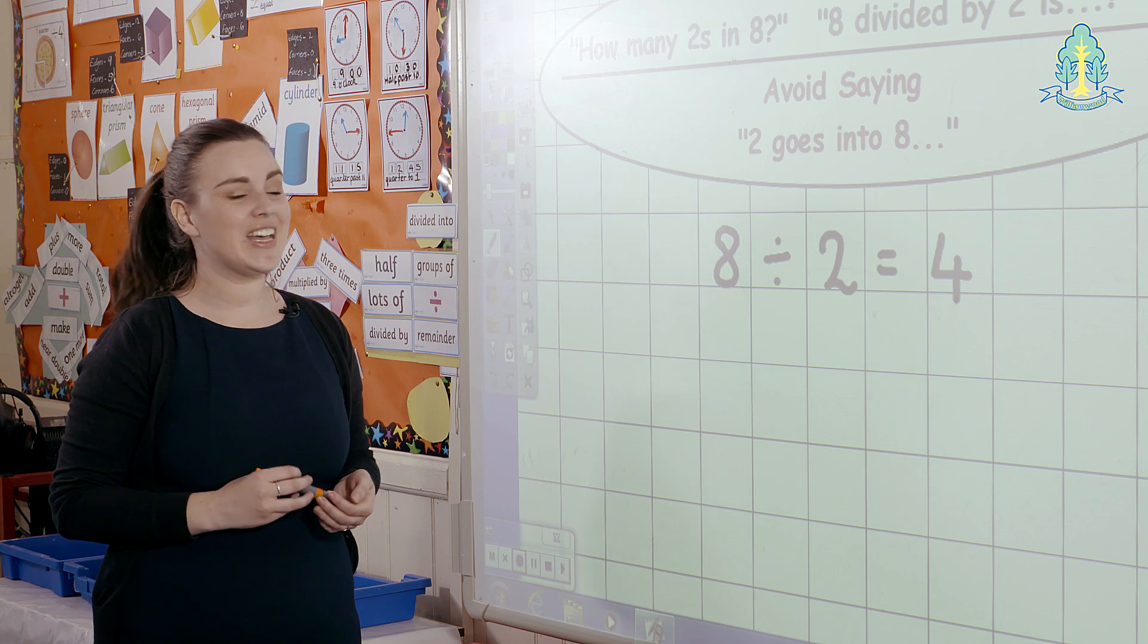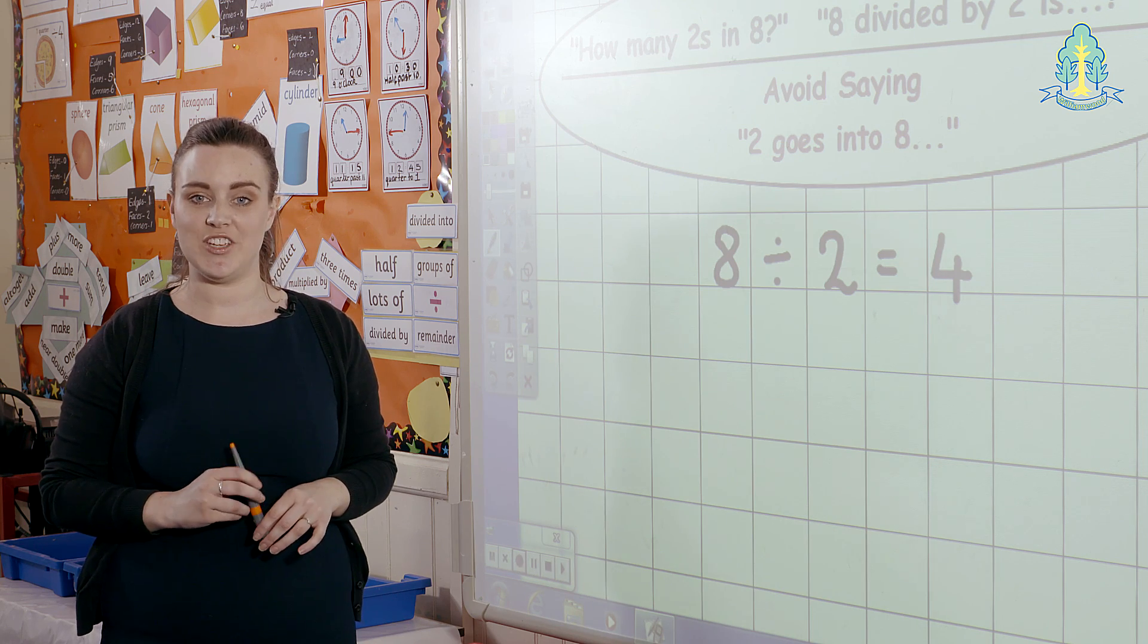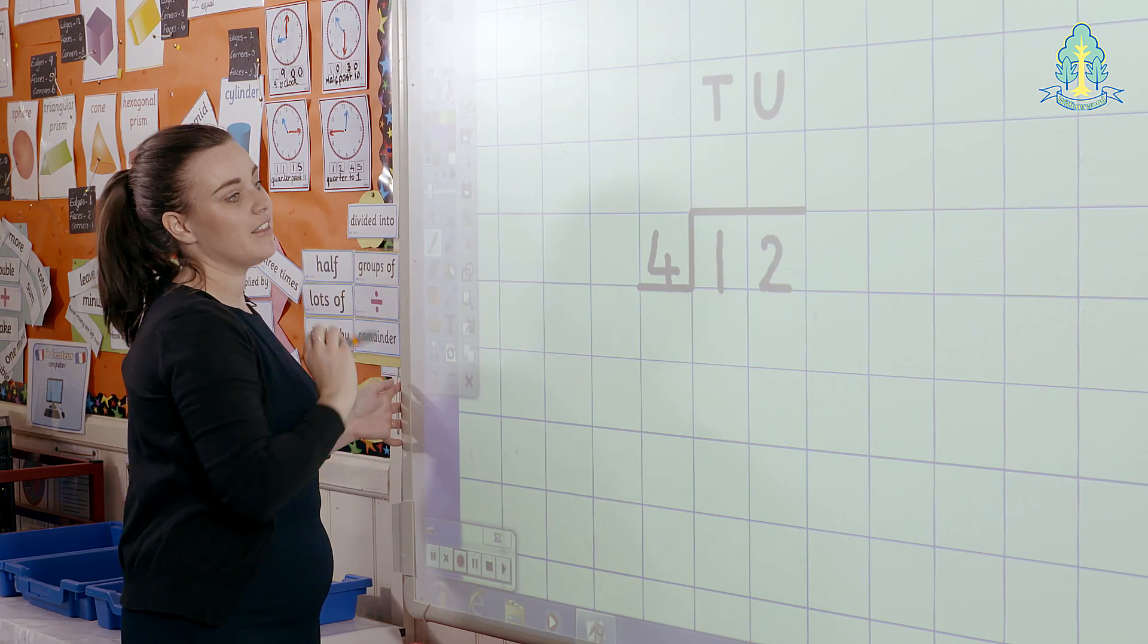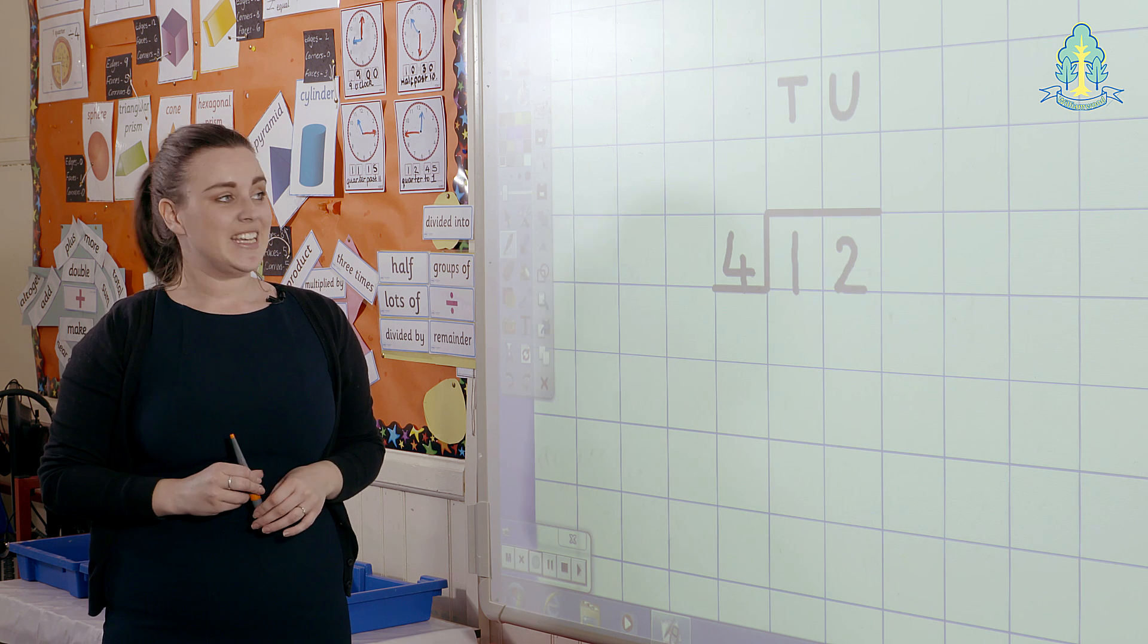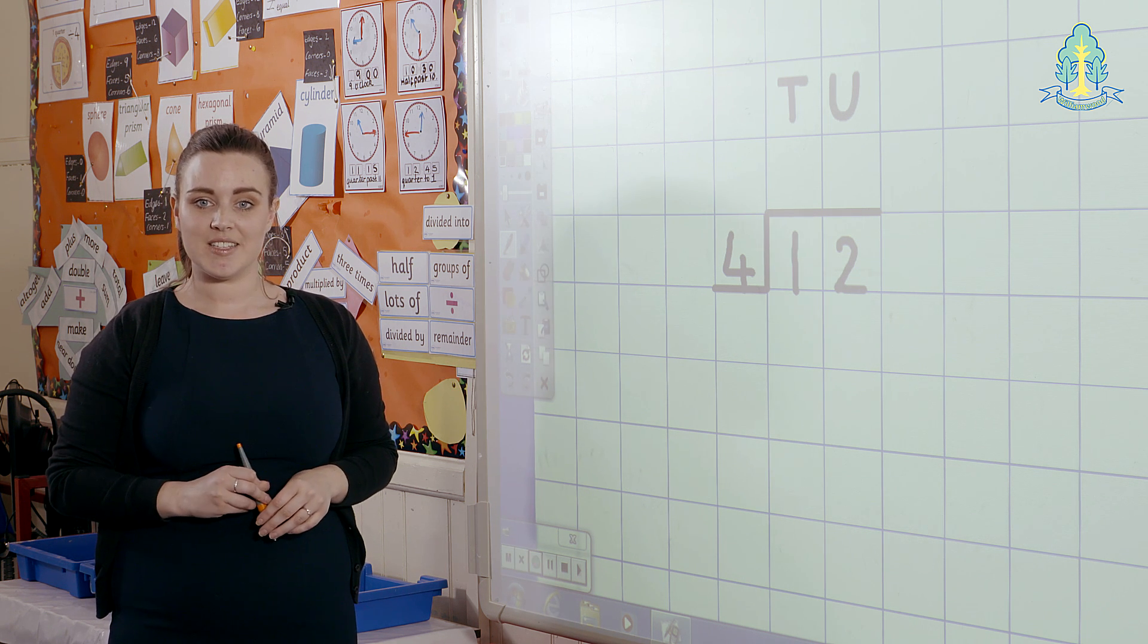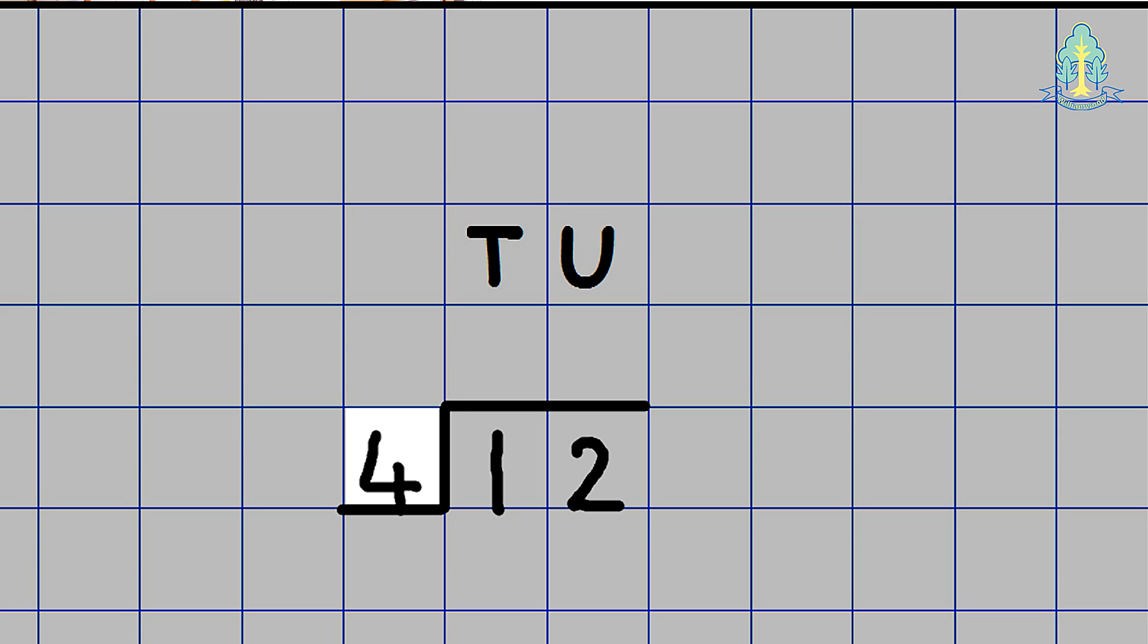Children are then introduced to a second way of writing down a division calculation, like this, where we have a units column and a tens column. In this example we have two units and we have one ten. We say 12 divided by 4 is, or how many 4's go into 12. Children would write their answer above the line, like this.